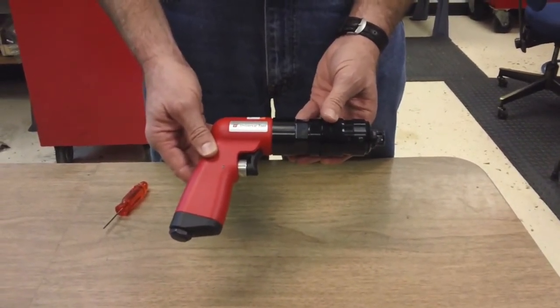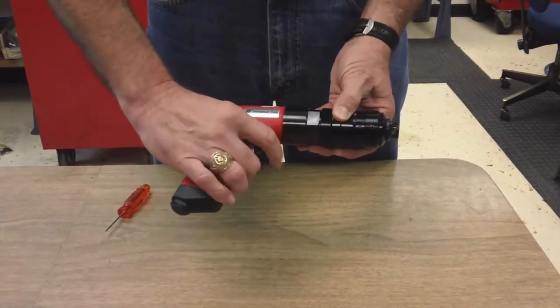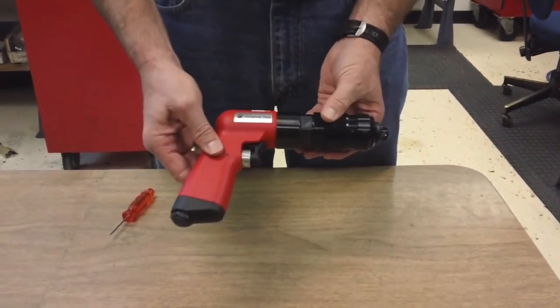It's a 20,000 RPM, 9 tenths horsepower tool. It's got a very good teasing throttle, which is a trademark of Universal Tool.